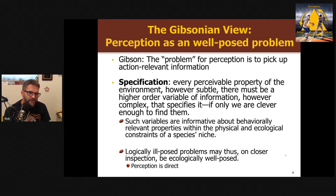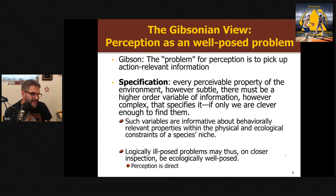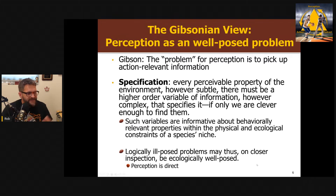The second pillar to his view is specification. We need these action-relevant properties, and in the environment there is information that directly specifies them. All we have to do is educate our attention and find them. There are variables in our environment — like tau — that are informative about behaviorally relevant properties within the constraints of an animal's environment. They do not require any elaboration or prior knowledge. There's information that directly specifies what we need. Thus, perception is not ill-posed — it's not missing variables. If you just change what the problem of perception is, then it's ecologically well-posed, and perception can be direct.